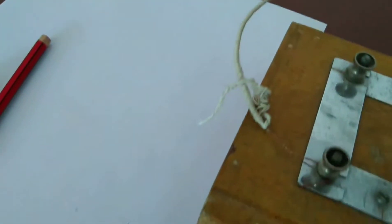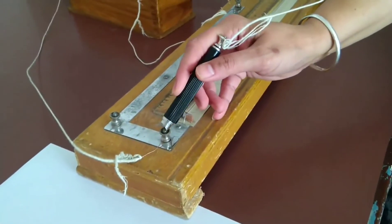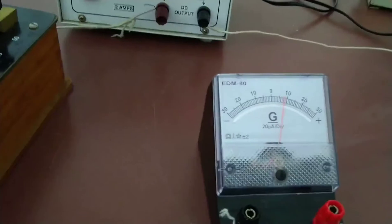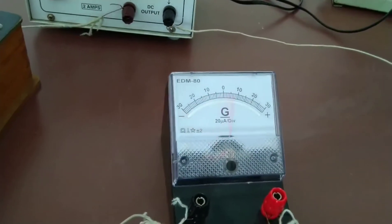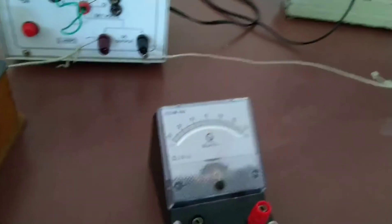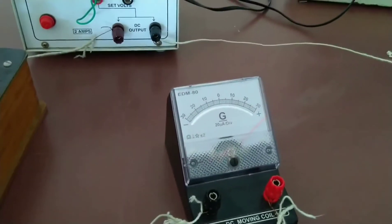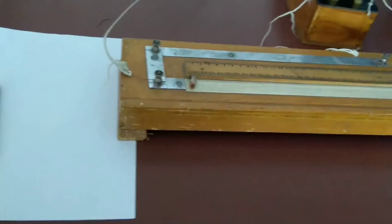First of all we turn on the circuit. When I put the jockey on the right hand the deflection is this, and when I put this jockey on left side the deflection is this. So this is the condition that our circuit is working properly.